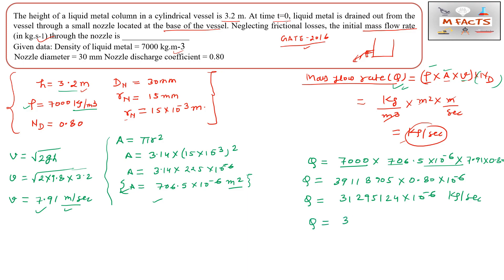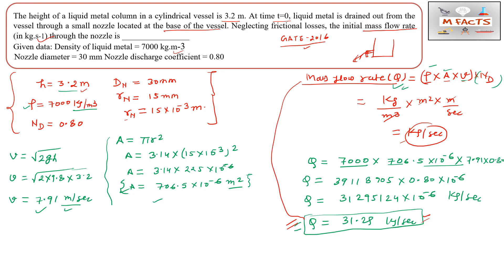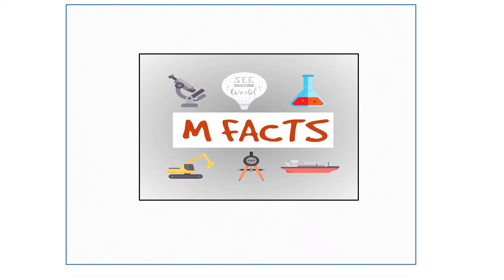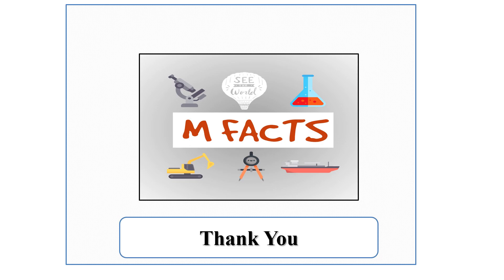So the answer for this question is 31.29 kg/s — that is the initial mass flow rate. This is an important problem for GATE metallurgy. Thank you for your attention; I hope you learned something new. Please post your problems on our Instagram page and we will solve them one by one in upcoming videos.